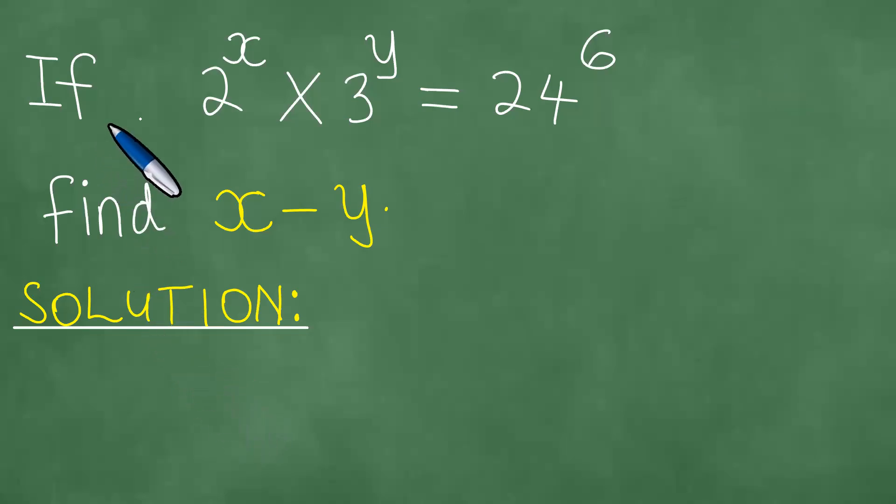Right, if 2 to the power x times 3 to the power y equals 24 to the power 6, find x minus y.